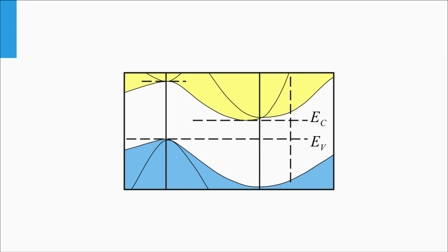Now we zoom into the band gap area. The band gap energy is the difference between those two levels and equals 1.12 eV, or 1107 nm expressed in wavelengths. This transition is an indirect transition. The charge carriers need energy and momentum transfer to be excited.